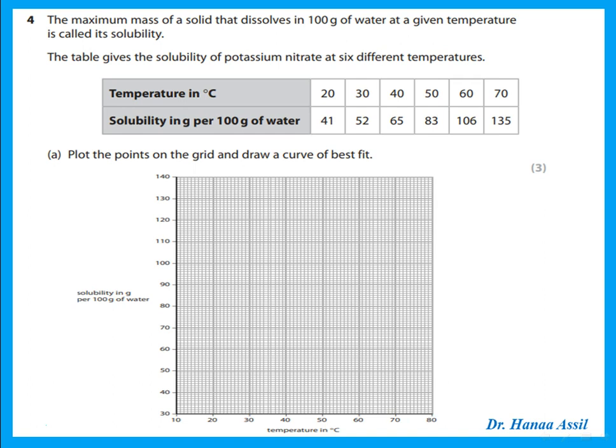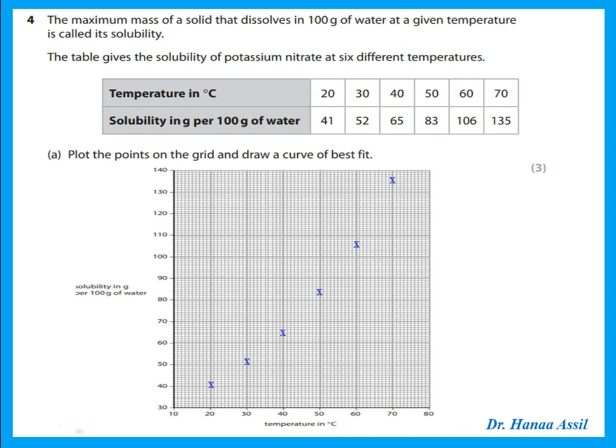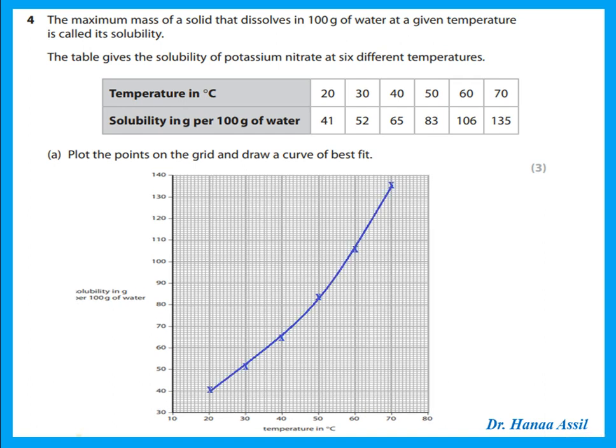Question 4: the maximum mass of a solid that dissolves in 100 grams of water at a given temperature is called its solubility. Remember that is the definition of solubility — the mass of a solid that dissolves in 100 grams of water at a certain temperature. The table gives the solubility of potassium nitrate at five different temperatures. Plot the points on the grid and draw a curve of best fit — plot the points as X's, then draw a smooth curve joining most of the points.